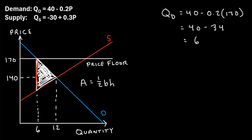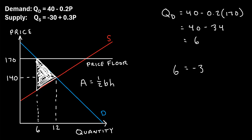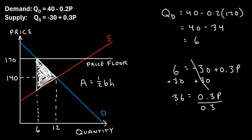The last thing we need is the height of this triangle. We know the price floor is at 170. To find the lower price point, we plug a quantity of 6 into the supply curve and solve for P: 6 = negative 30 + 0.3P. Adding 30 to both sides gives 36 = 0.3P. Dividing both sides by 0.3, we get P = 36 divided by 0.3, which is 120. So this point on the supply curve is 120, and the height of the triangle is 170 minus 120, which is 50.